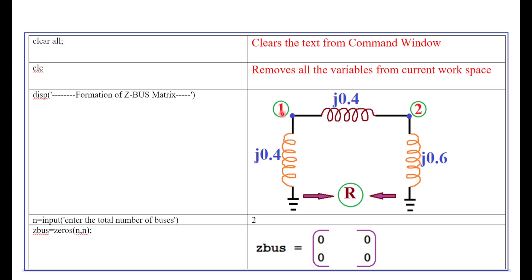I am going to explain the ZBUS matrix using this power system network. This power system network consists of two buses and three elements: J0.4, J0.4, and J0.6. There are two buses — bus 1 and bus 2 — and one reference bus. Then, enter the input value. N is the input; enter the total number of buses. There are two buses, excluding the reference bus.